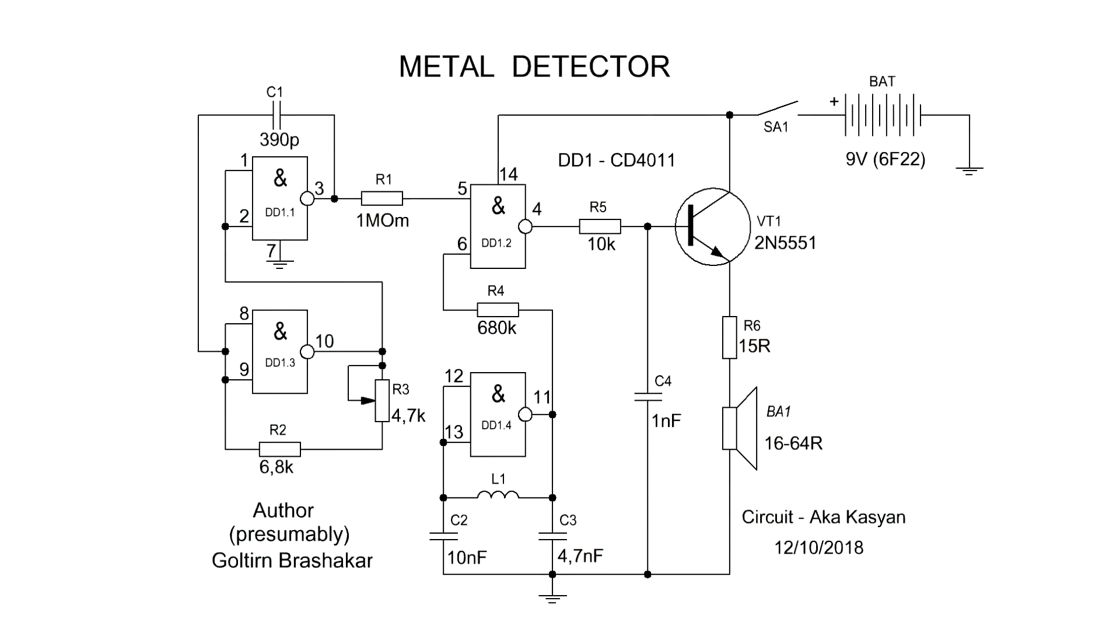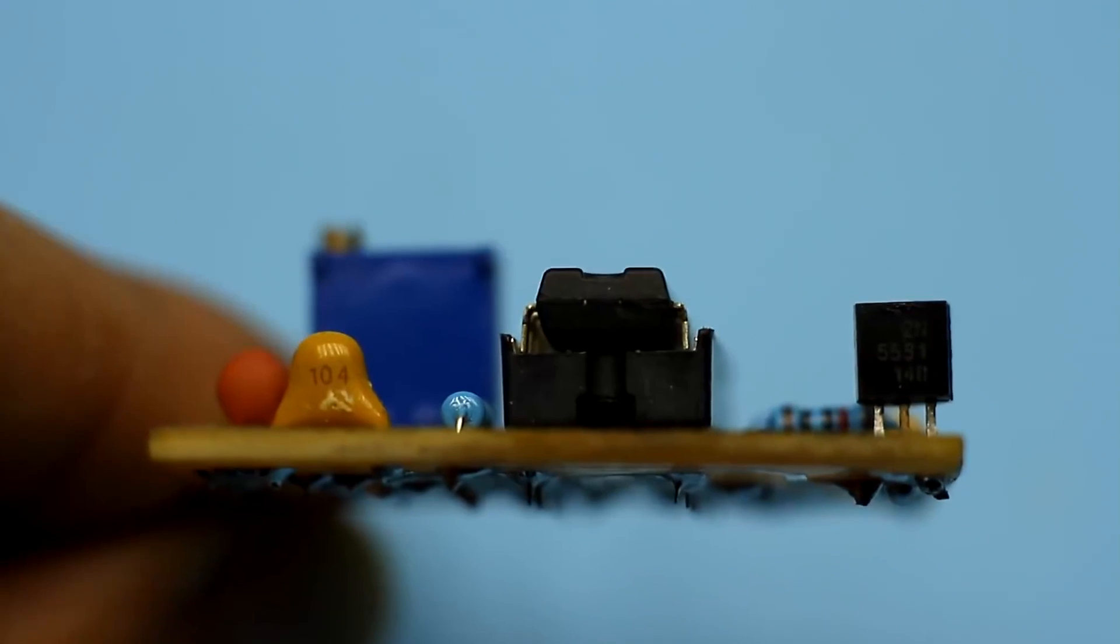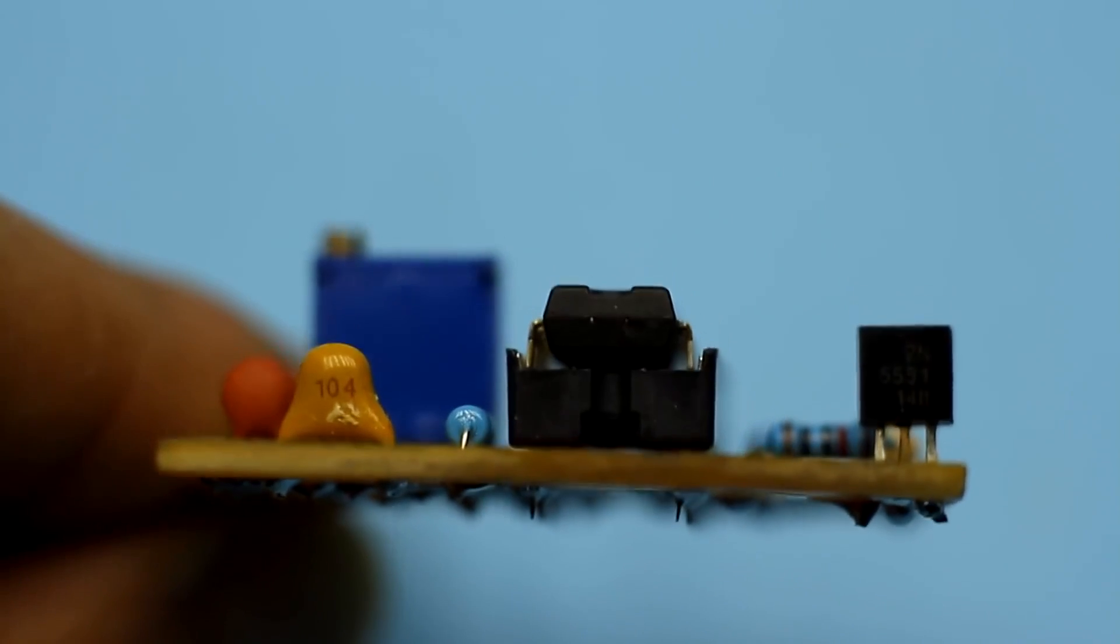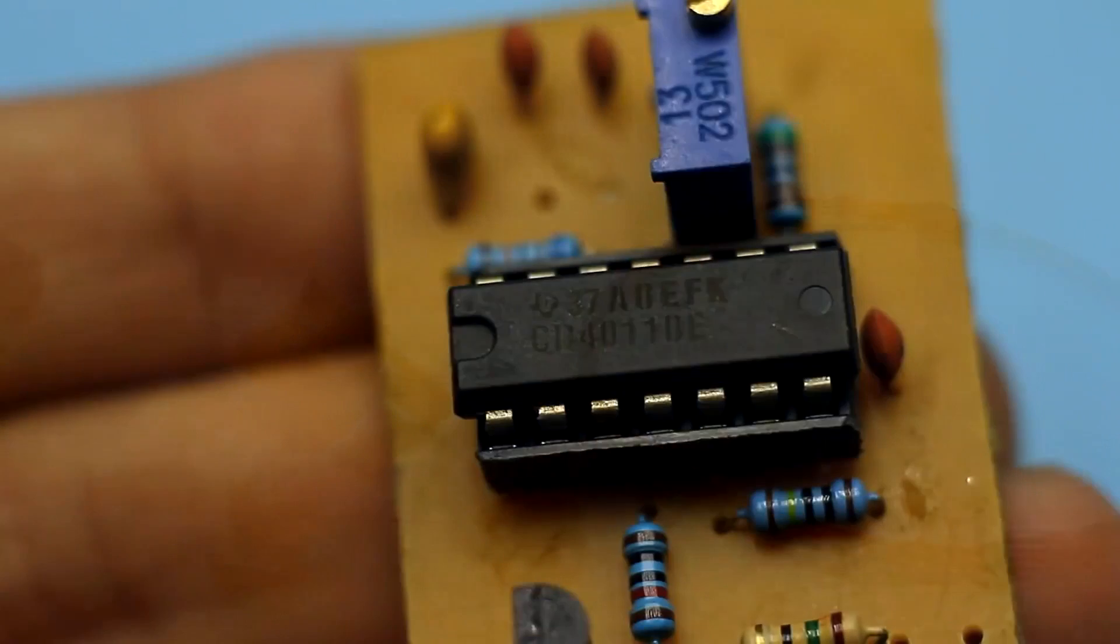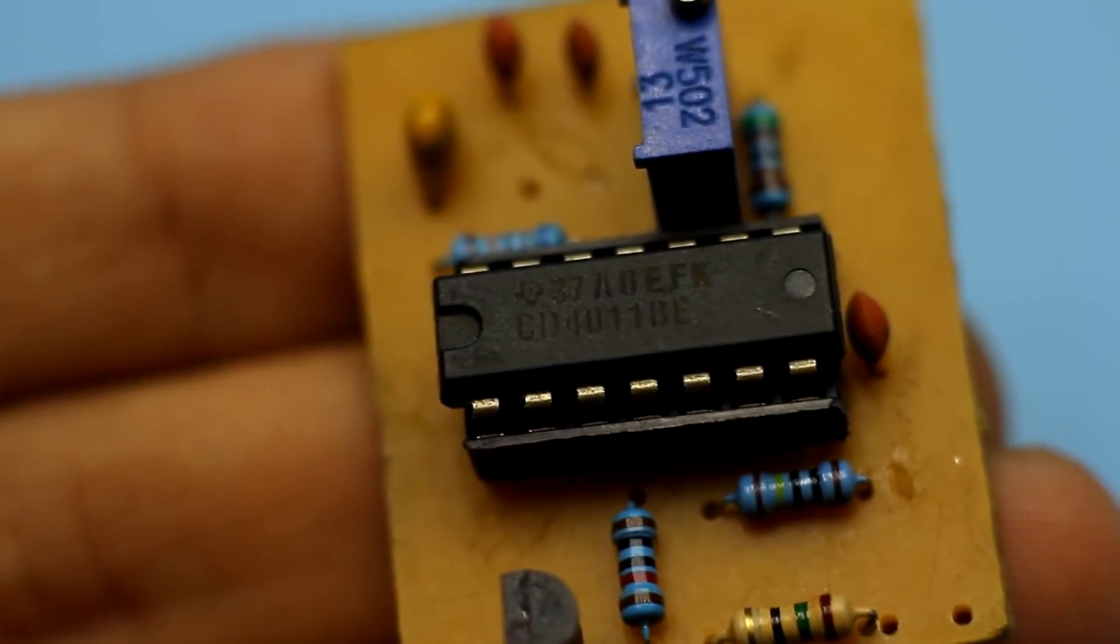The circuit has many advantages. Firstly, this is the presence of only one coil. Secondly, an extremely simple and not capricious circuit, which practically doesn't require additional configuration. And finally, it is built on just one chip.